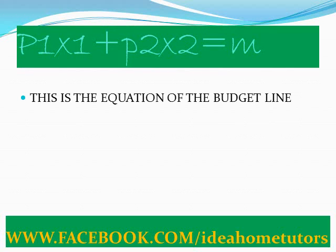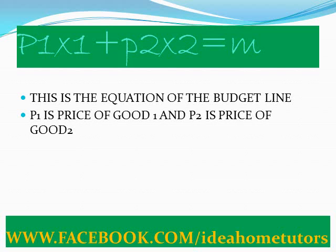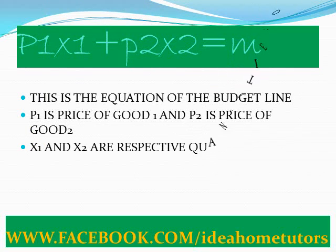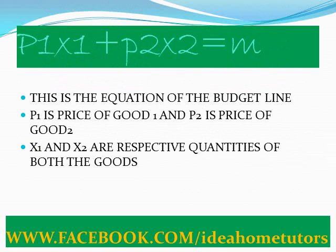This is the equation of the budget line: P1 x1 plus P2 x2 is equal to M. Here, P1 is the price of good 1, P2 is the price of good 2, and x1 and x2 are quantities of good 1 and good 2 respectively. Those bundles of goods which make expenditure exactly equal to the income satisfy this equation. In other words, these are the bundles of goods that just exhaust the consumer's income — the consumer has nothing more left to spend, and all his income is finished.